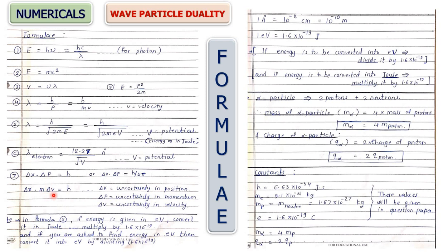Δp can be written as m·Δv, so the formula becomes Δx · m · Δv = h, where Δx is uncertainty in position, Δp is uncertainty in momentum, and Δv is uncertainty in velocity. An important point: when using λ = h / √(2mE), the energy E must always be in joules.